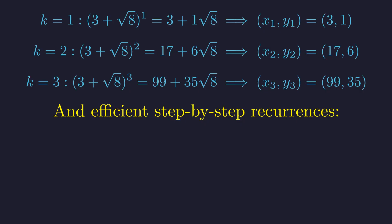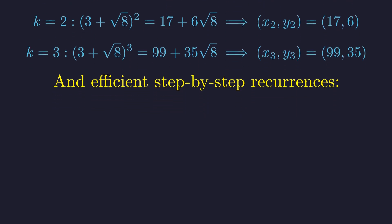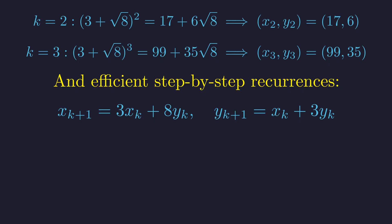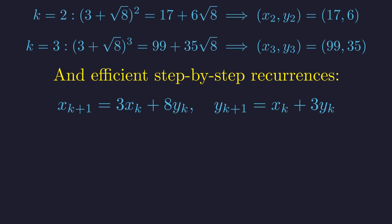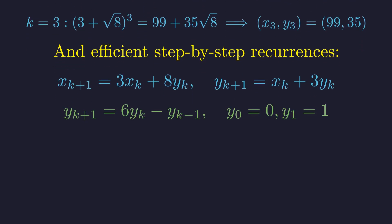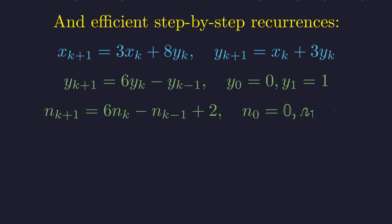We can also derive efficient recurrences to compute solutions step by step. The first-order recurrences directly follow from the multiplicative structure. Each new solution depends linearly on the previous one. We can also derive a second-order recurrence for y. Each term equals 6 times the previous term minus the term before that. Similarly for n, but with an additional constant term of 2 due to the transformation n equals x minus 1 over 2.